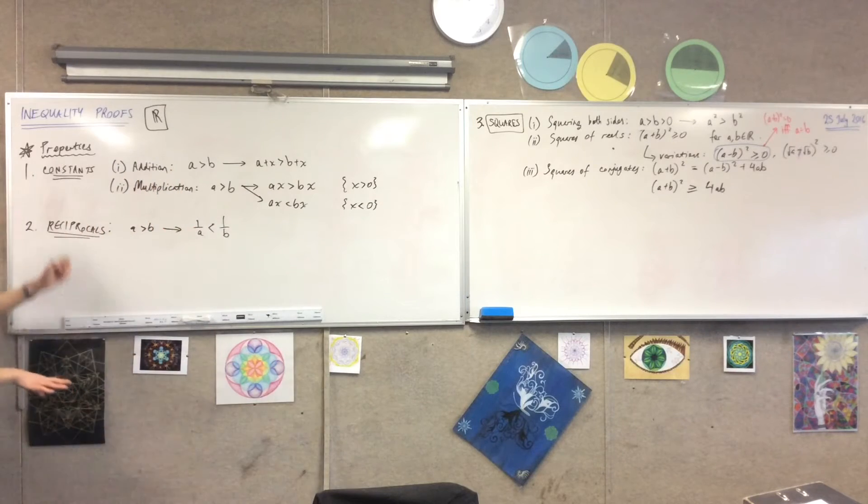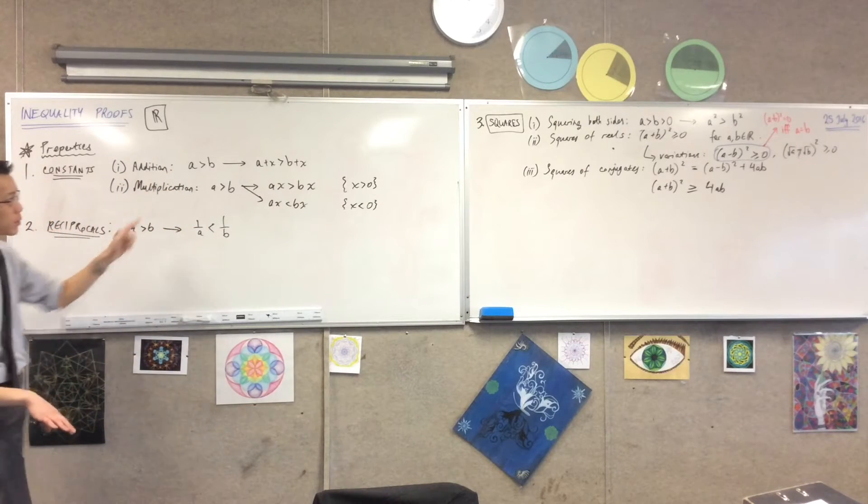Okay, I said I had four categories for this, so I've got constants, reciprocals, squares.